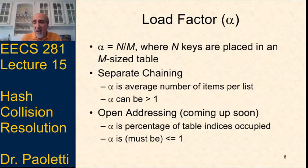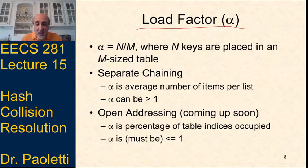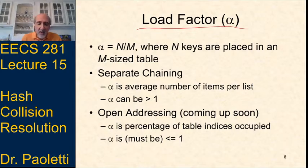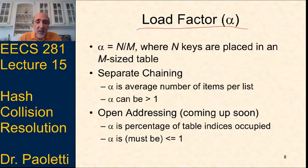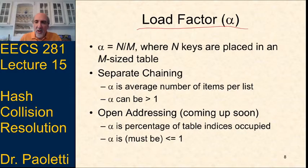This n/m has a name. We use the letter alpha to designate what's called the load factor. The load factor alpha tells us in separate chaining what is the average number of items per list. When we get to open addressing, it tells us how much of the table is occupied. In separate chaining, alpha could be greater than one — I could have a hash table of size 8 and put 20 items in it, expecting the average list to be about 2.5 items. For open addressing, alpha must be less than or equal to one.